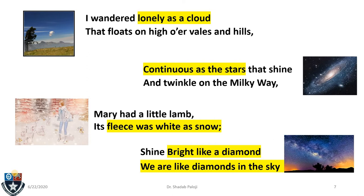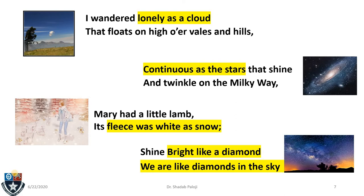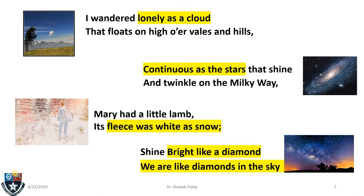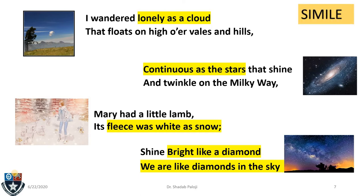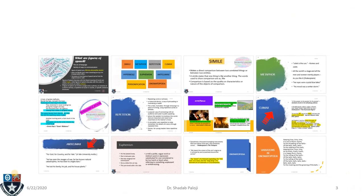Now, if you see the highlighted phrases — 'lonely as a cloud,' 'continuous as the stars,' 'fleece was white as snow,' 'bright like a diamond,' 'we are like diamonds' — the common simple words used in these phrases are 'as' or 'like.' These words are used to show some kind of relationship between two things. Such kinds of phrases would be called simile. So let us learn a little more about simile.